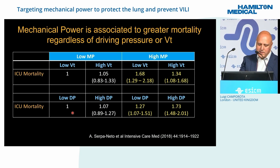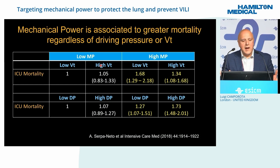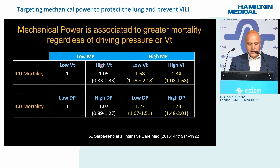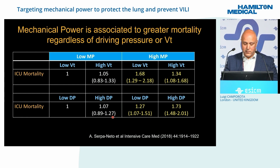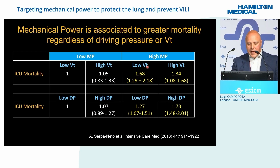With low mechanical power on the left and high mechanical power on the right, you can have low mechanical power even with a high tidal volume — and even in the presence of high tidal volume, because total energy is low, there is no increased risk of mortality. Similarly, high driving pressure with low total mechanical power also shows no mortality signal. But the problem occurs with high mechanical power: even if tidal volume is small, if respiratory rate is high or PEEP is high, the total odds ratio for mortality increases.